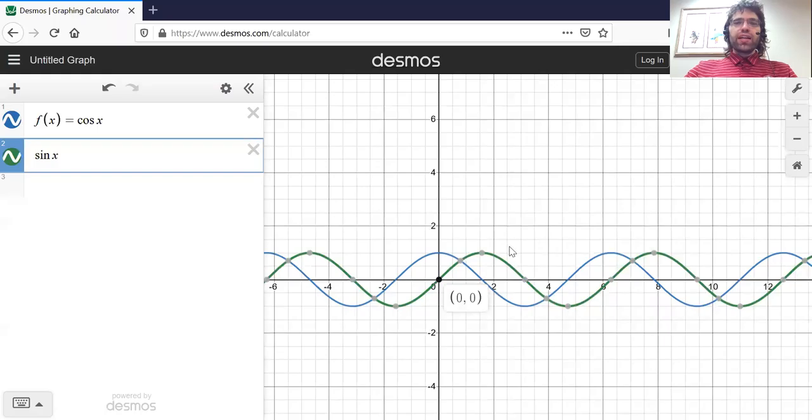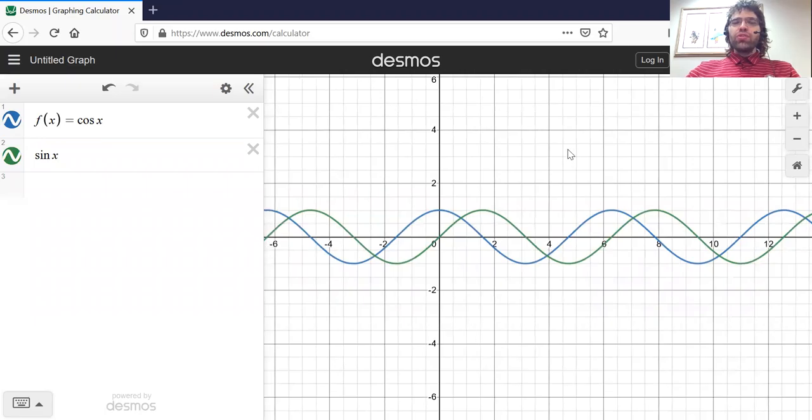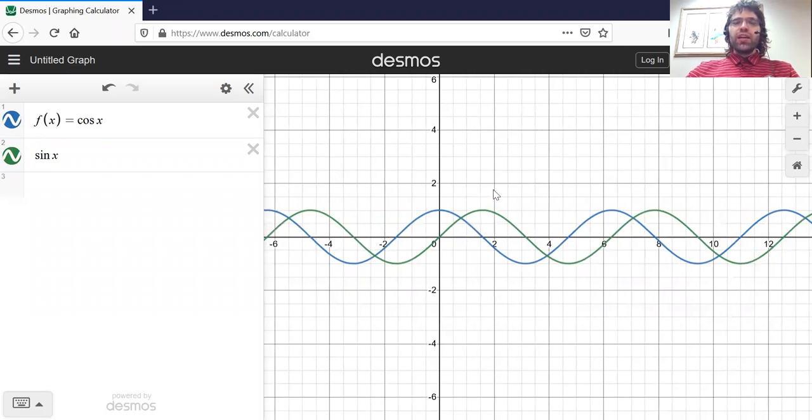At zero, the cosine is up here at one versus the sine, which was down there. But now that you have both these graphs at once, you can see what I said.